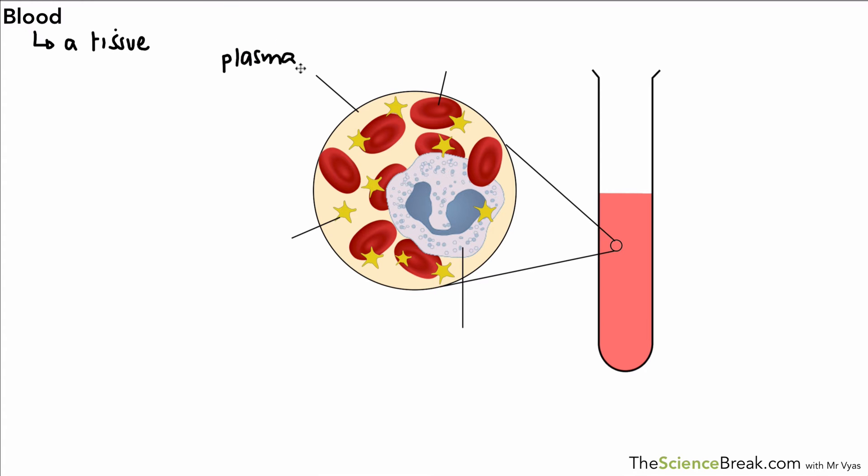The plasma is the liquid in which everything else is suspended. This is our red blood cell, and the reason why blood is red is because there are so many of those red blood cells. We have these larger cells which are the white blood cells, and then we have these small cell fragments which are called the platelets.